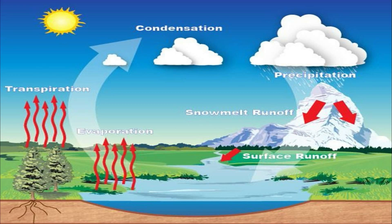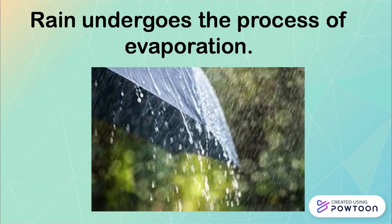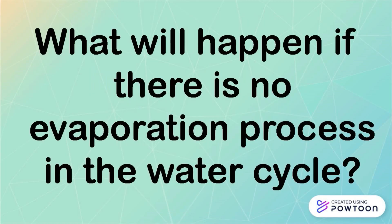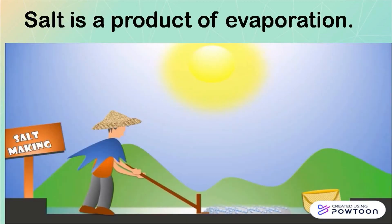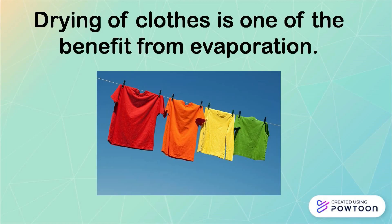Condensation happens when warm air rises, cools, and loses its capacity to hold water vapor. As a result, excess water vapor condenses to form cloud droplets or precipitation. Evaporation plays an important role in the water cycle because rainfall is a product of evaporation. Salt is also a product of evaporation. Evaporation is important in food preparation, and drying of clothes is another benefit of evaporation.